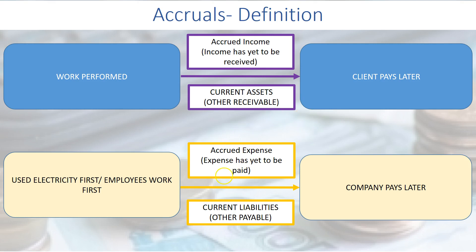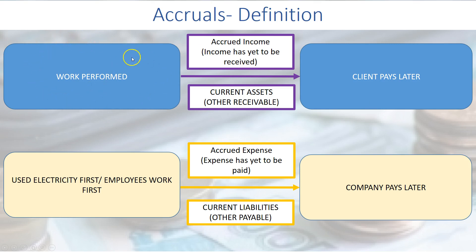Let's look at this diagram. From the point of the business, when we perform work, we are supposed to get paid. However, our client or customer pays us later. So in this case, from our perspective as a business, it means income has yet to be received.